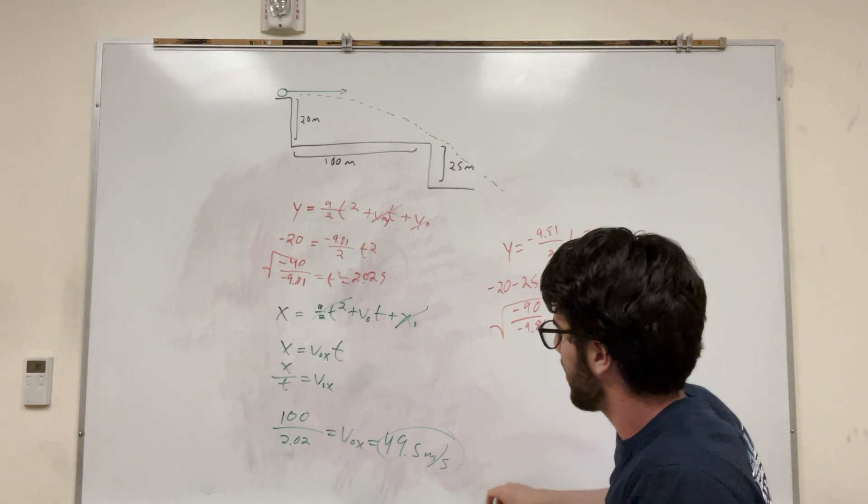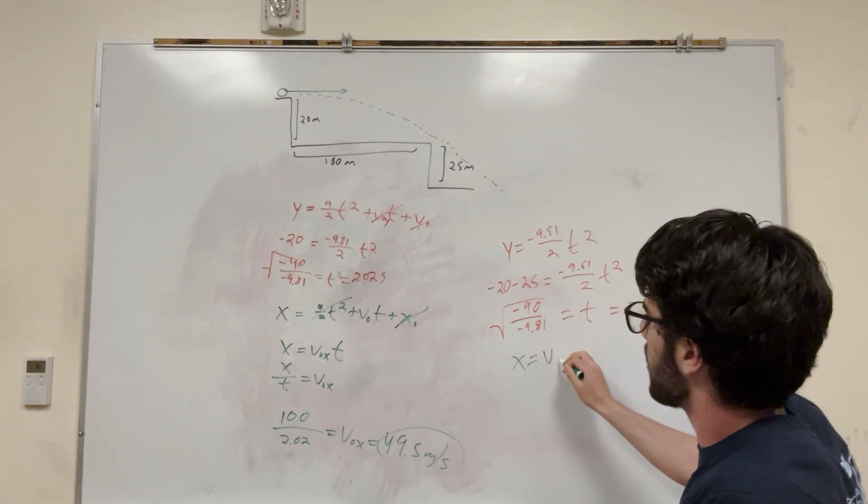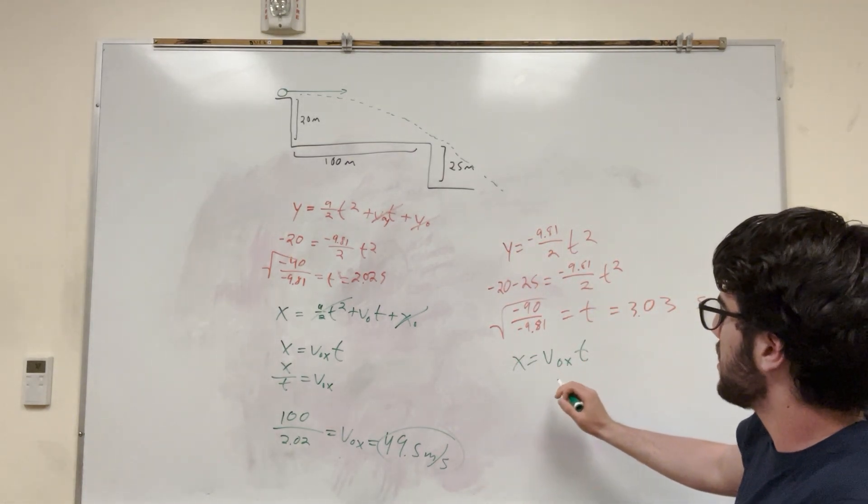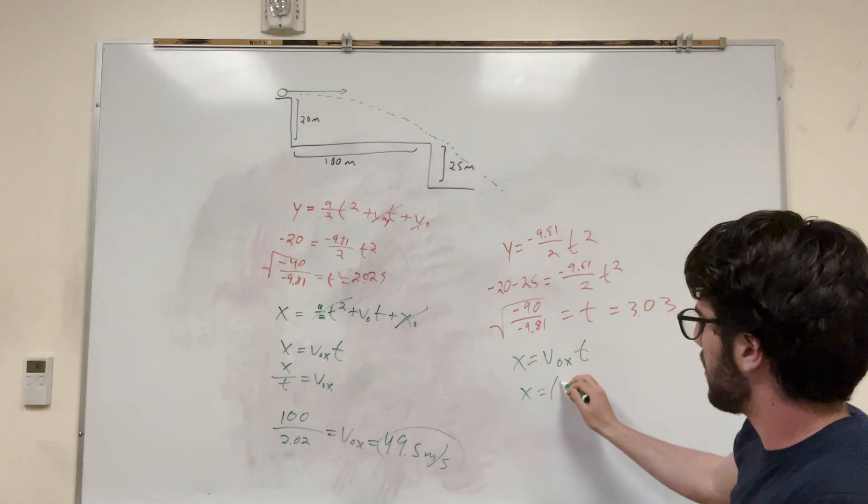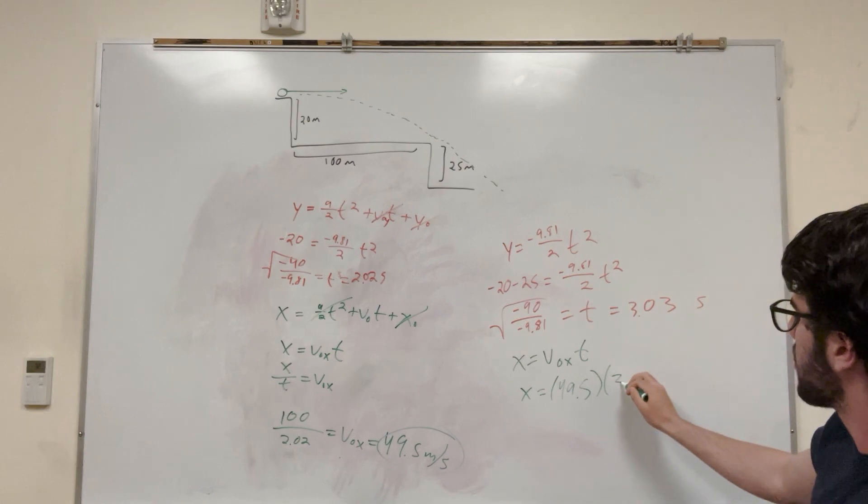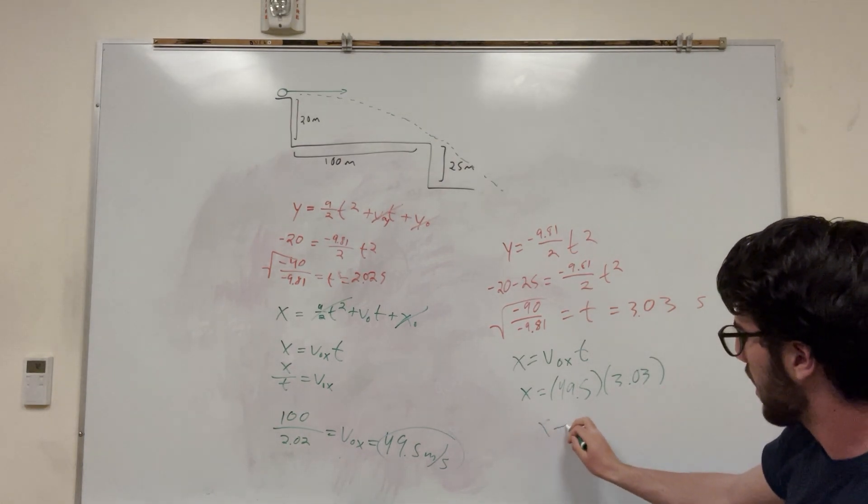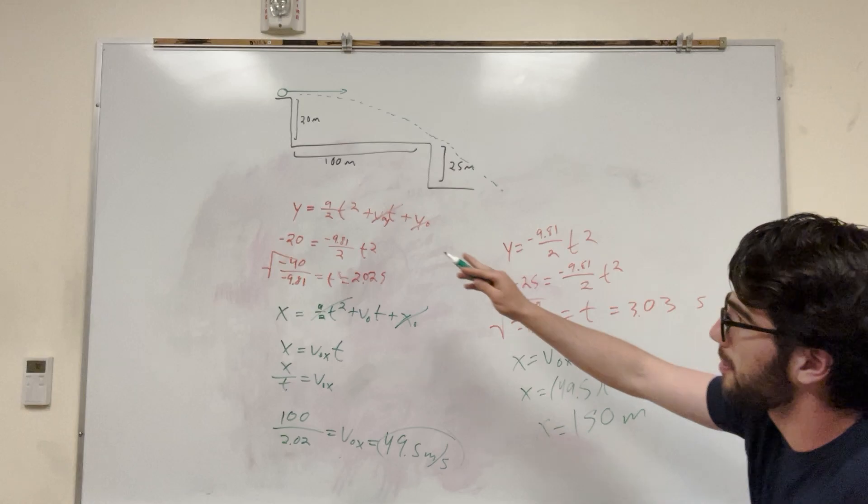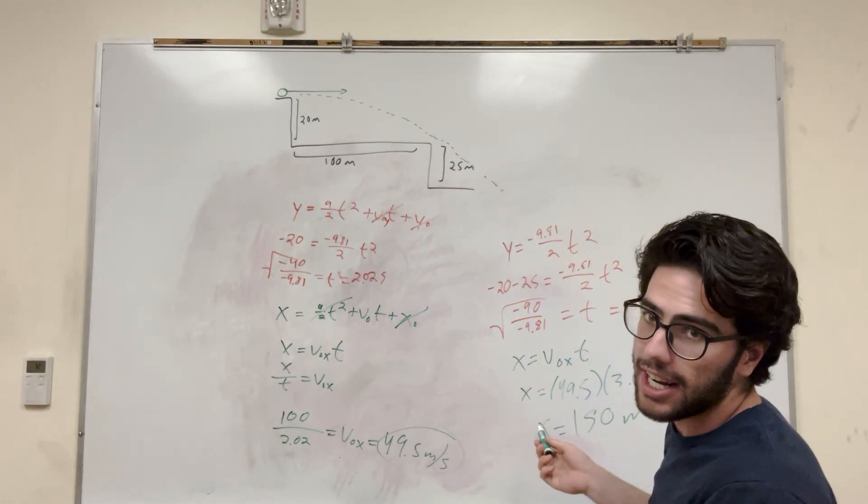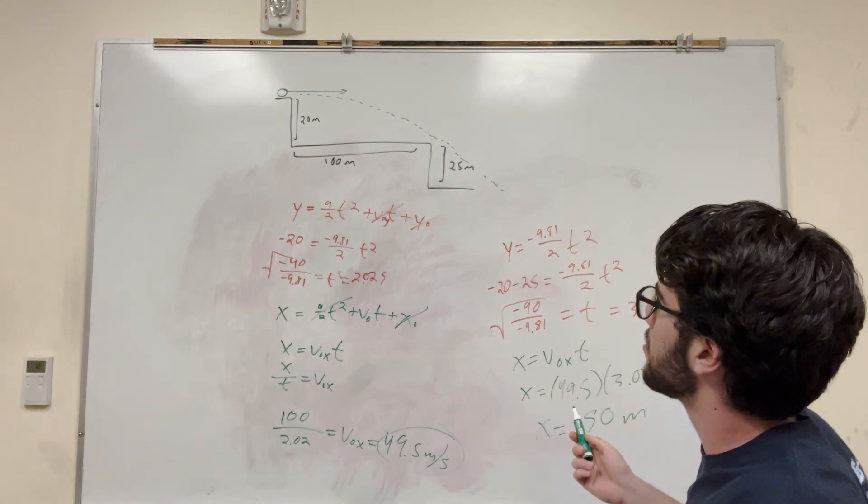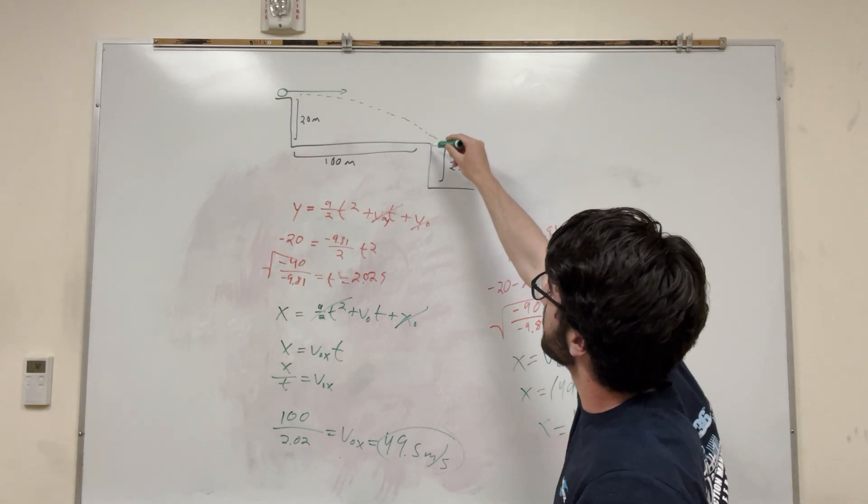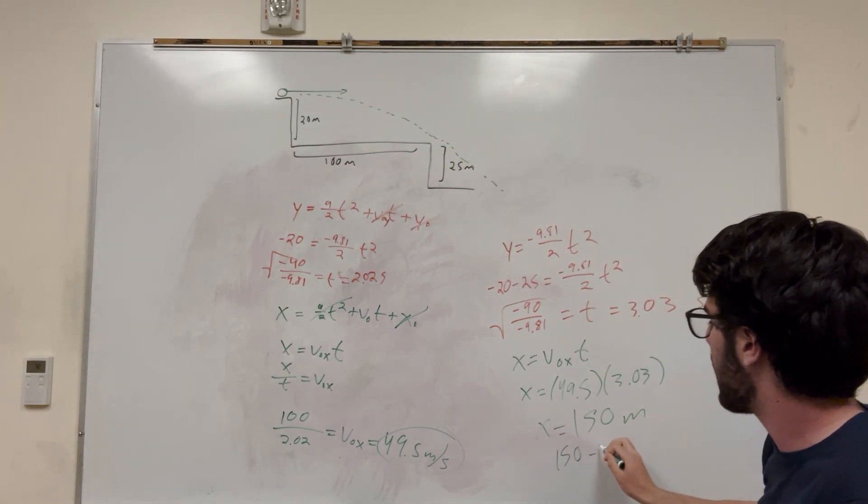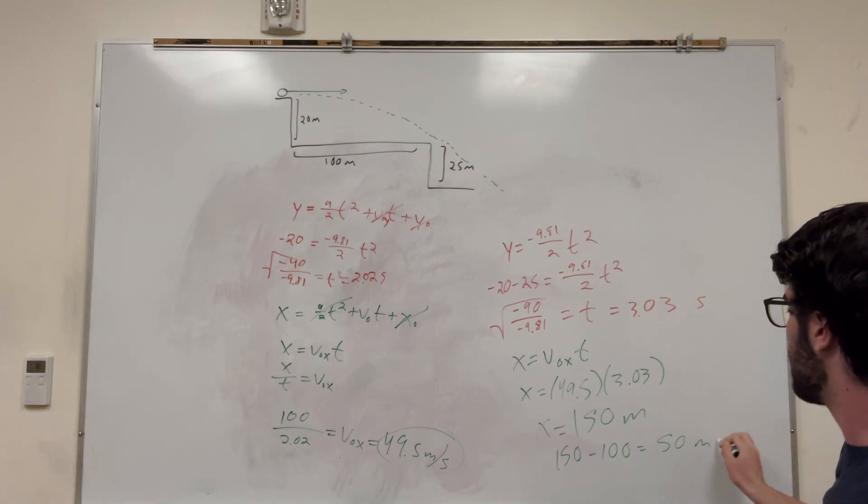So we can run it back to this equation which we had over here. x is equal to v naught x times t. So we're trying to see how far we're going to go. We're looking for x this time. But we have t. So x is equal to, we found it to be 49.5 and then 3.03 seconds is how long it takes. Calculate this, and you get 150 meters. So that's how far from our starting point that we landed in the x direction. But that's not actually the number we're looking for. We're trying to find how far from the ledge we come from. So we know that this is 100 meters, and we know that we go 150 meters. So you can just say 150 minus 100 is equal to 50 meters. And that's how far from the ledge we go.